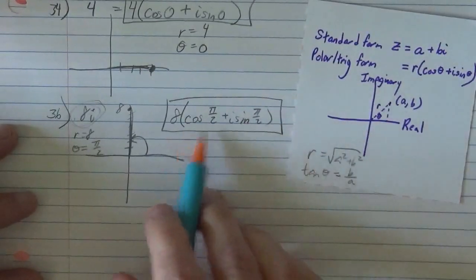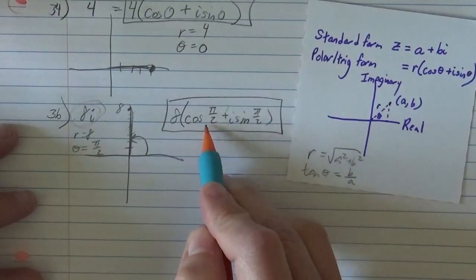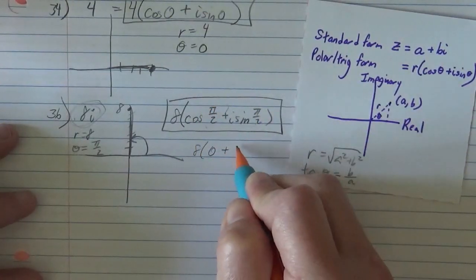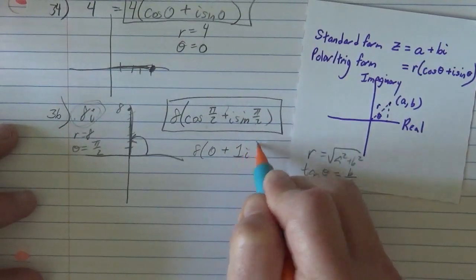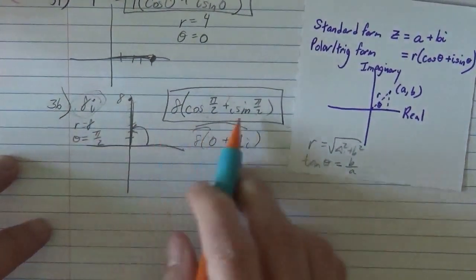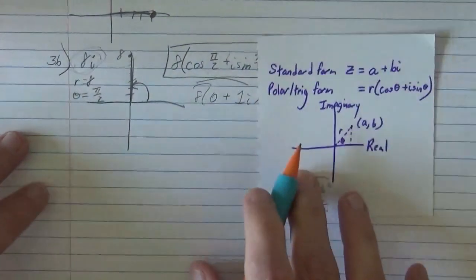But right now, we're just kind of doing it. And I encourage you, cosine pi halves is 0. So you'd have 8 times 0 plus, and the sine of pi halves is 1. So yes, this does go back to there. Just a clunky, different way of writing it. Clunky for now, useful later.